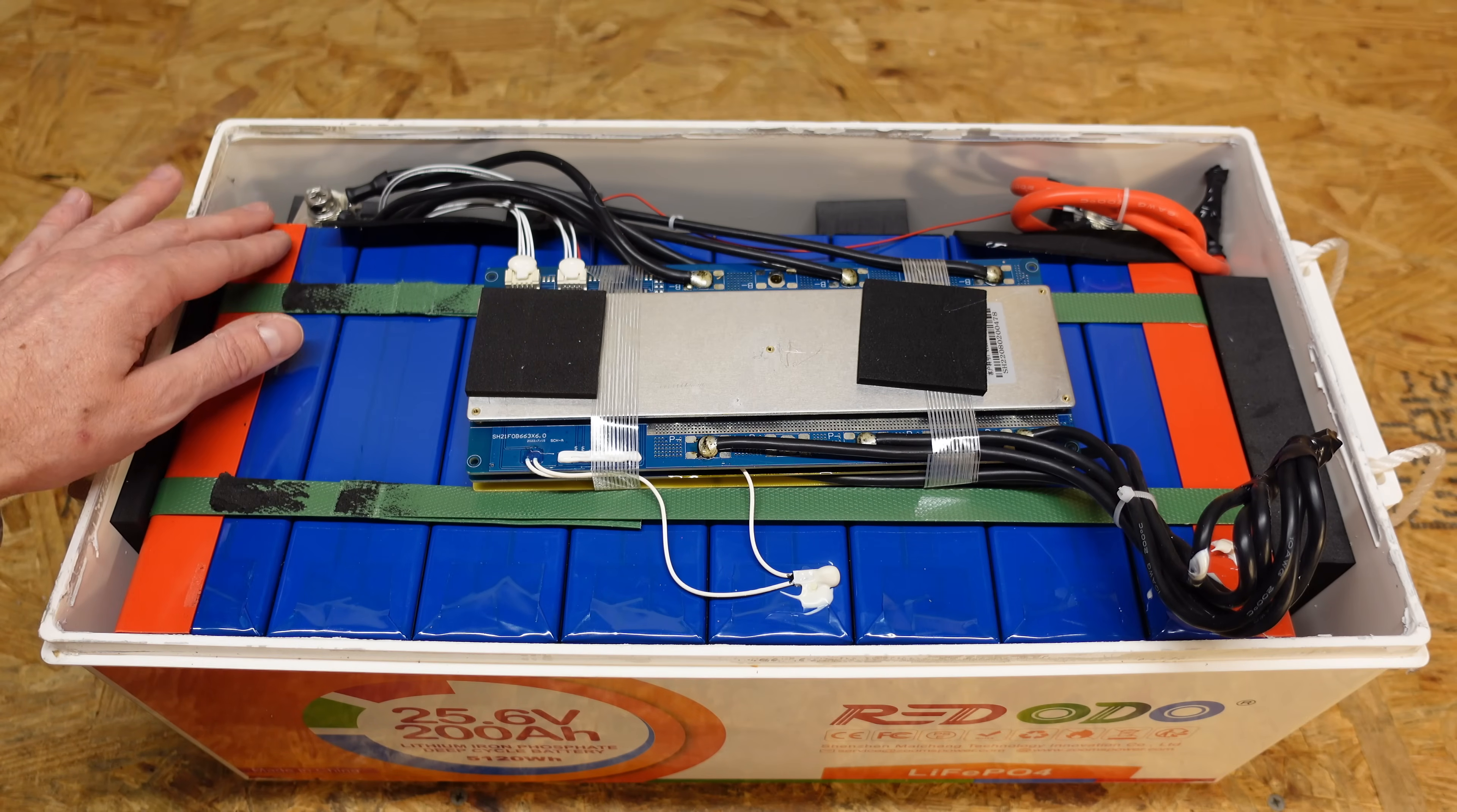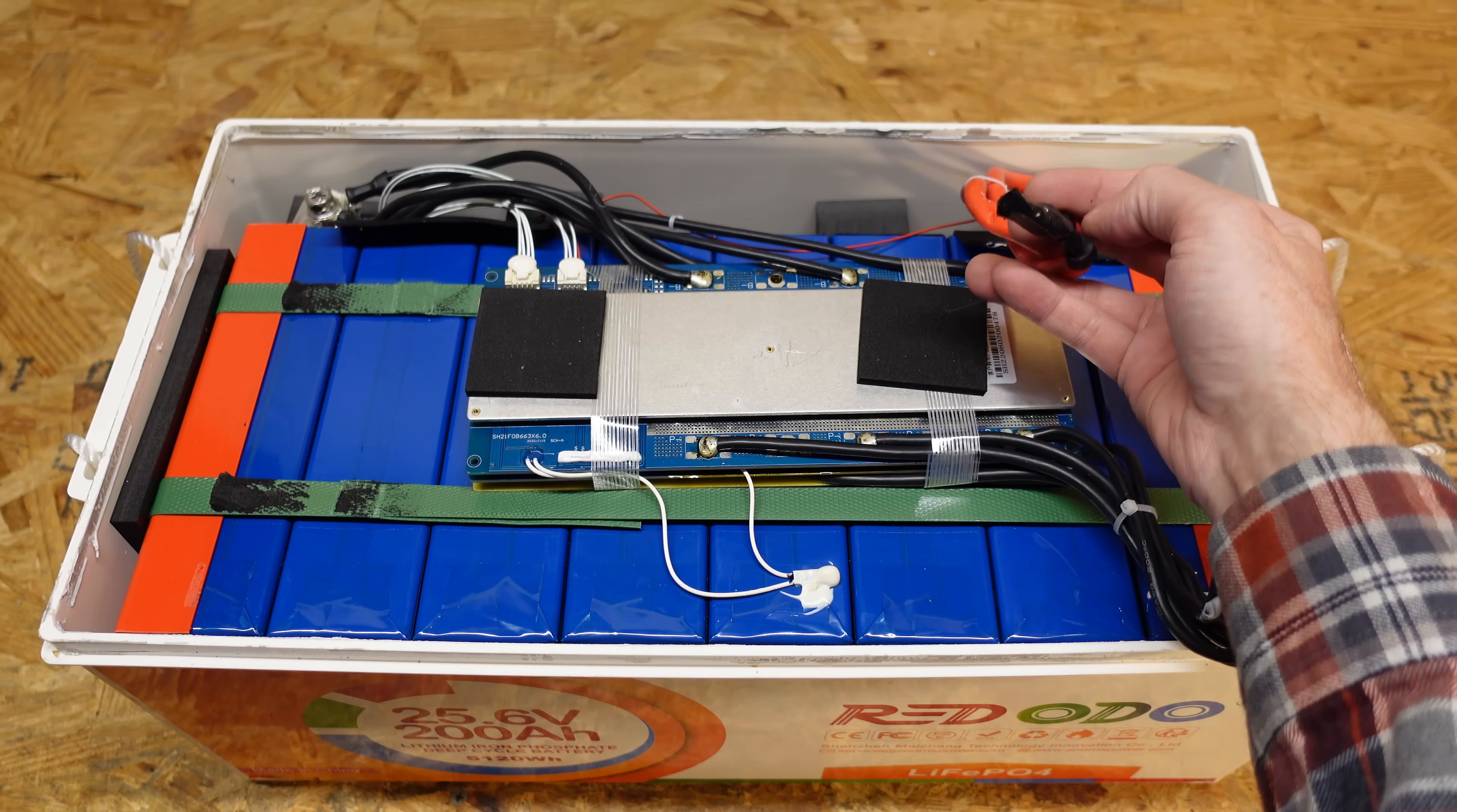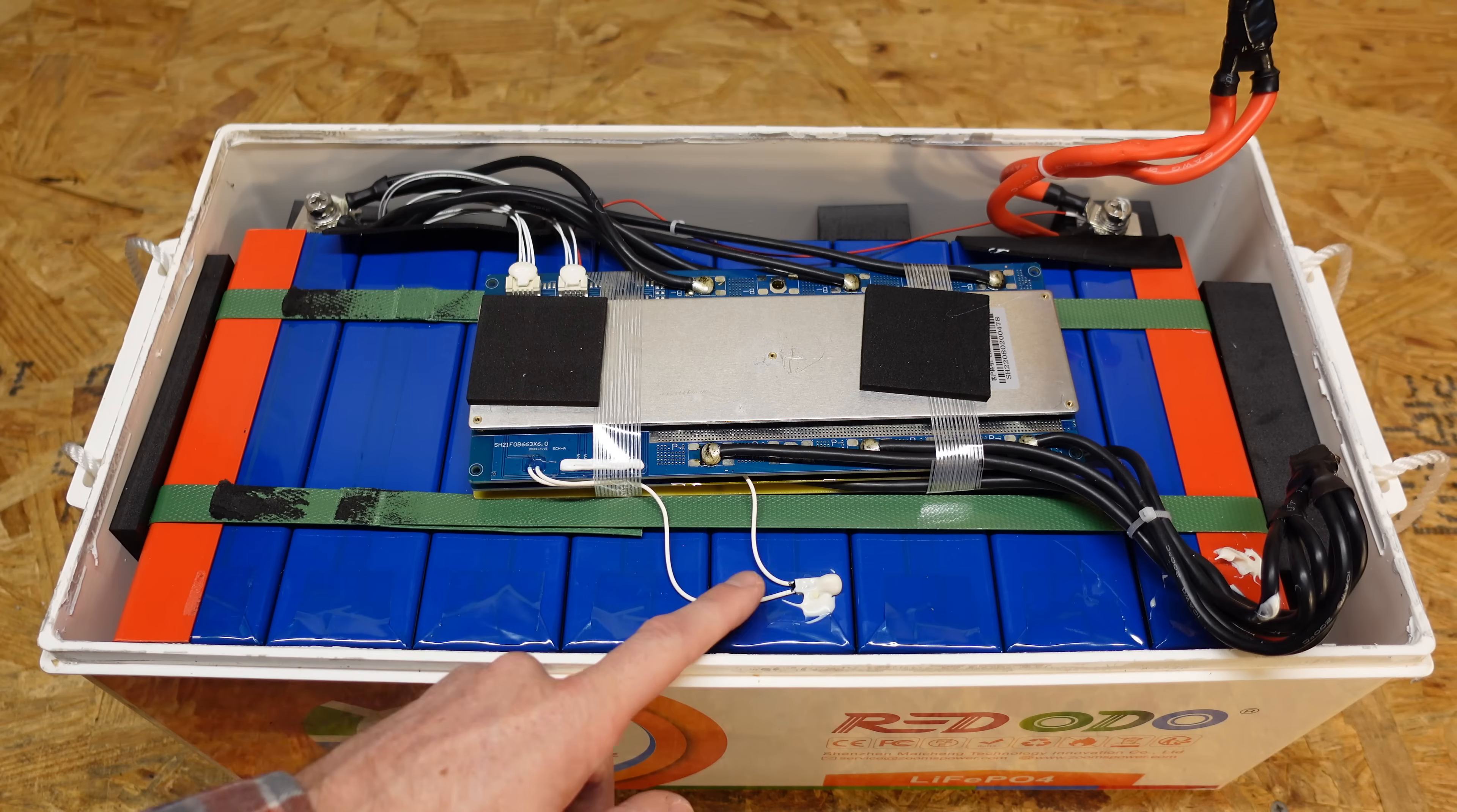Additionally, we have six number 10s coming off the main negative of the battery going into the BMS. And for our positive here, we have a pair of number six wires going from the main positive post of the battery up until the terminal. All of this wiring is silicone insulated, meaning it has a 200 degree Celsius insulation rating. I also see we have a thermal sensor here on the battery.